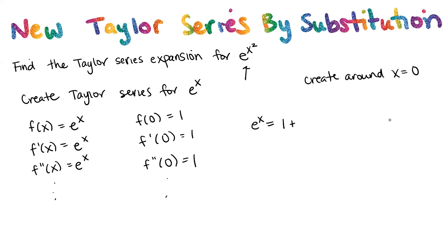So when we then create our Taylor series expansion for e to the x, we'd have 1 plus x over 1 factorial plus x squared over 2 factorial plus x cubed over 3 factorial plus x to the 4 over 4 factorial, and so on. So now we have the Taylor series expansion for e to the x.